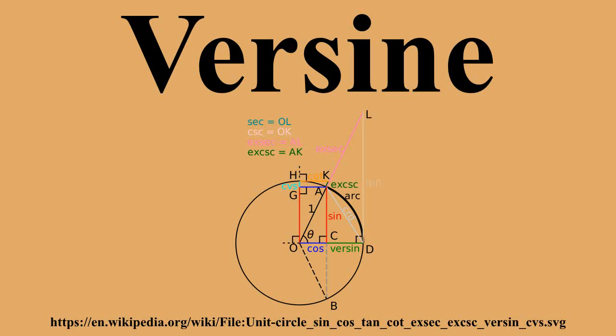On the other hand, the verse sine of θ is the distance CD from the center of the chord to the center of the arc. Thus, the sum of cos and versen is the radius OD.